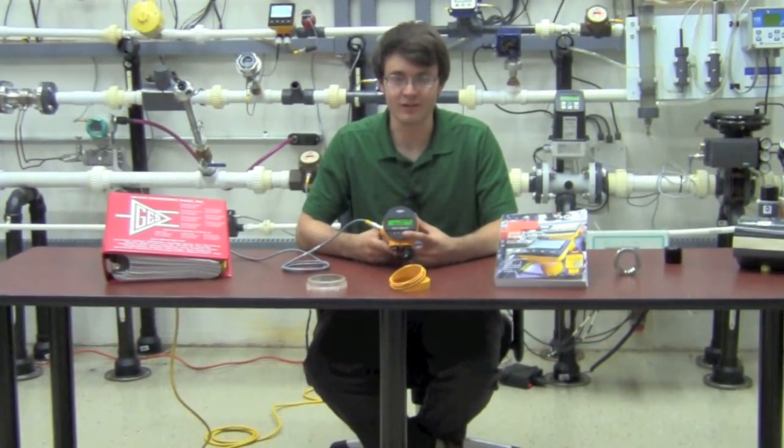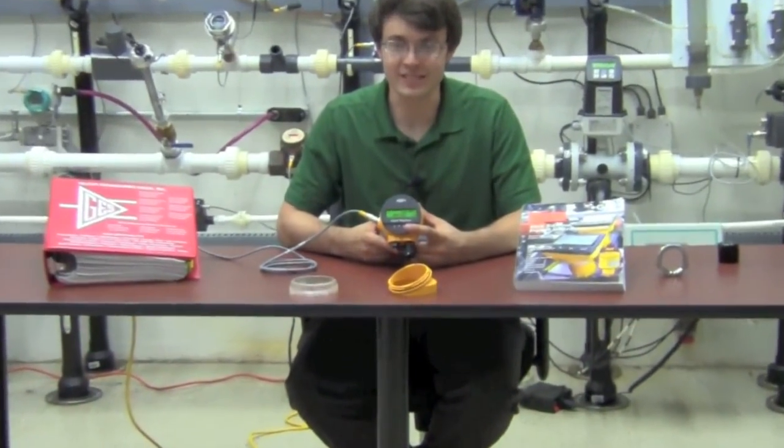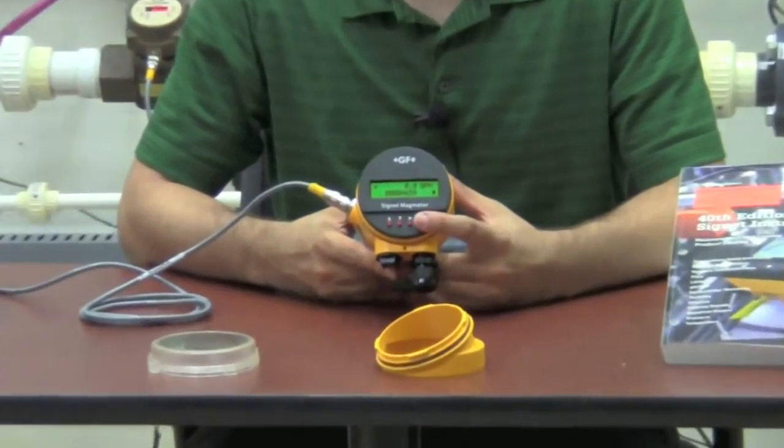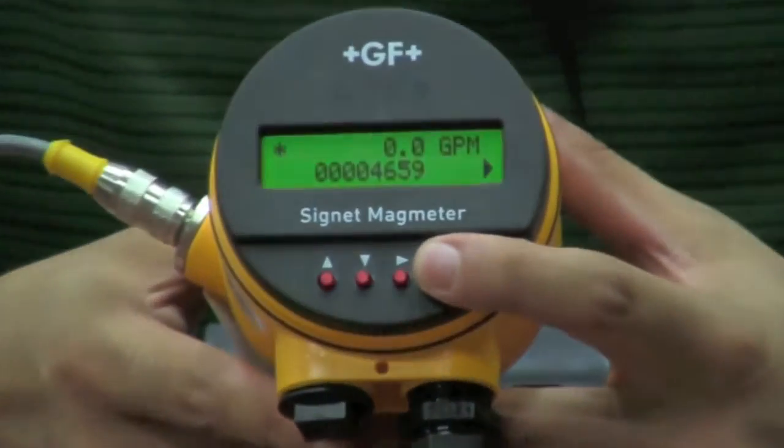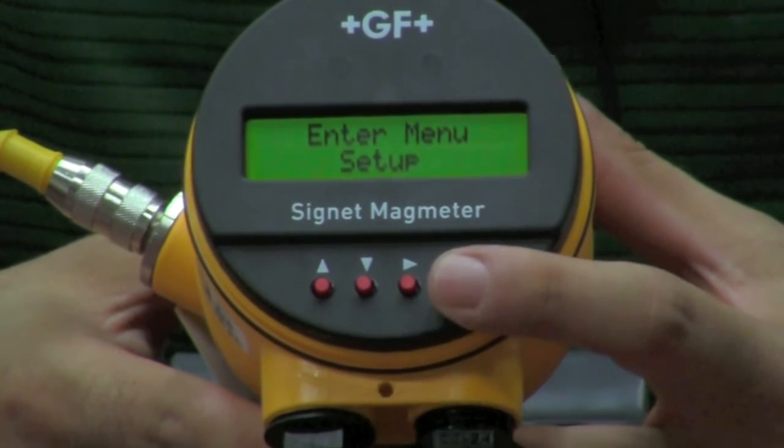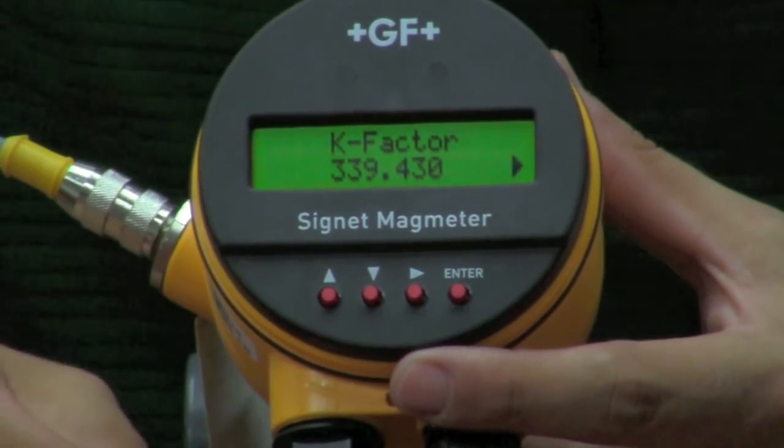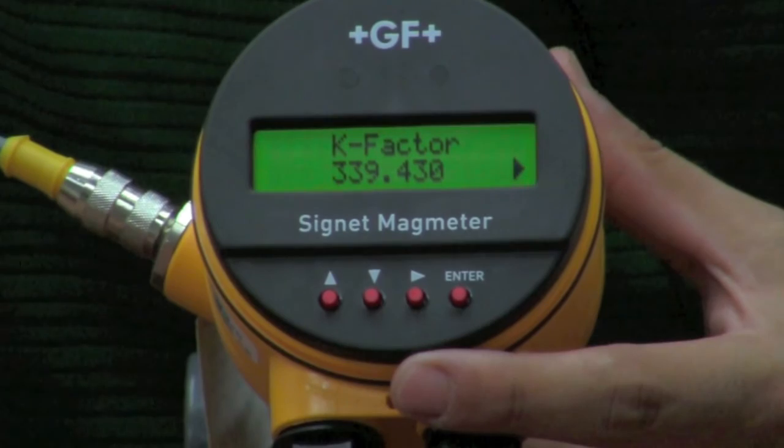With the Cygnet 2551, programming is just as simple as the installation. Simply press and hold the enter button for two seconds to get us into the programming menu. From here we press enter one more time and now we will have to enter a few parameters per our application.